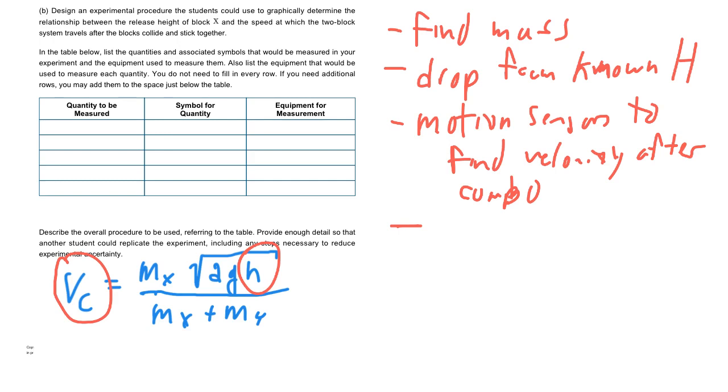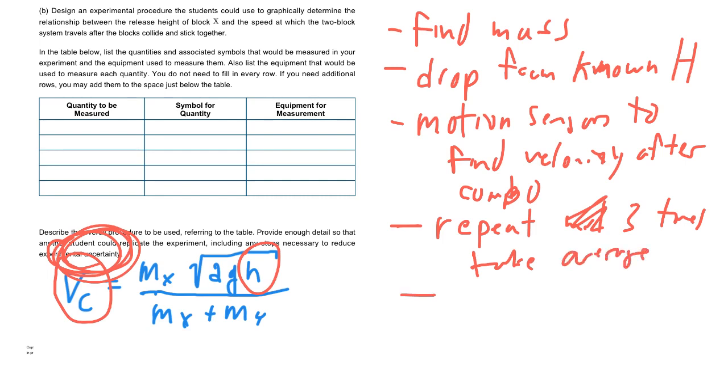Remember when doing these, you want to always say to do repeat statements. Whenever they're saying reduce experimental uncertainty, that's basically a hint that you're going to be needing to repeat things. So you're going to want to repeat multiple times, let's just say three times, take an average. And then you also want to do multiple levels of your variable. So we're dropping it from a known height, we're going to want to drop it from different heights.